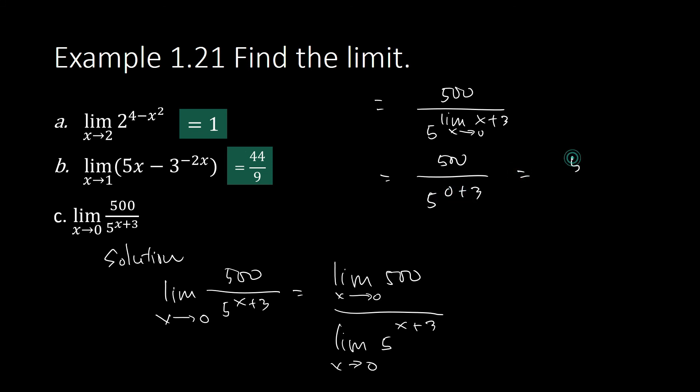And this is equal to 500 divided by 5 cubed. And 5 cubed is 5 times 5, that's 25, and then times 5 again, that's 125. And 500 divided by 125 is equal to 4.